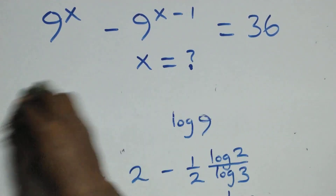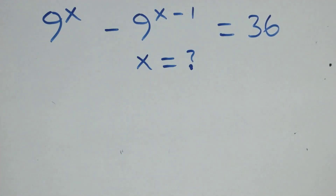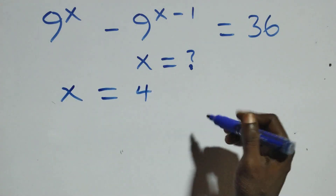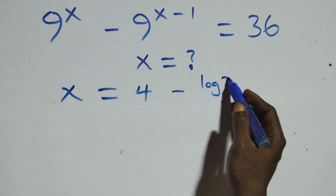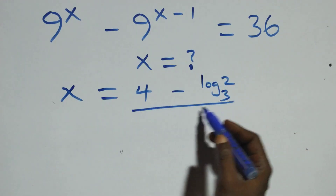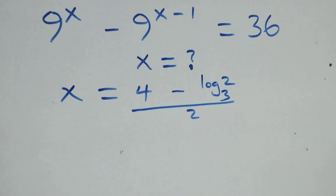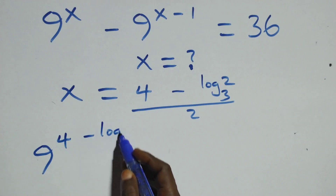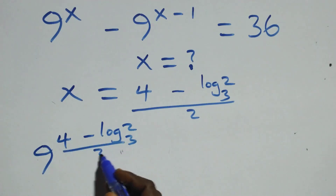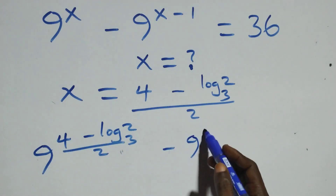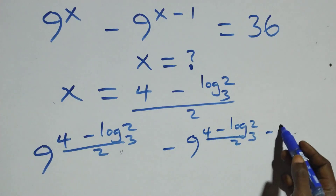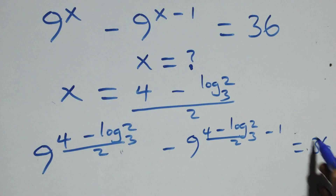Let's check that this satisfies the given problem. The value of x is (4 minus log₃2) / 2. Substituting back, we have 9 raised to power (4 minus log₃2)/2, minus 9 raised to power [(4 minus log₃2)/2 minus 1], equals 36 on the right side.